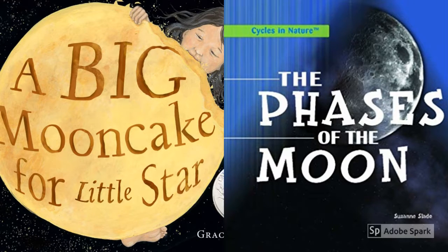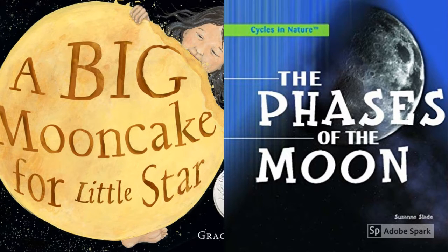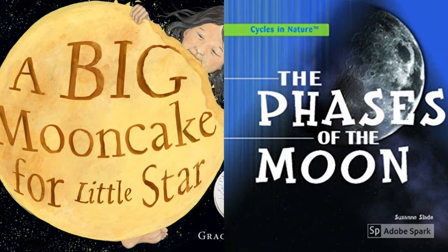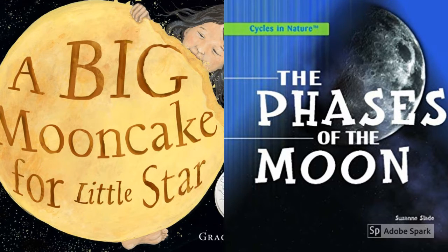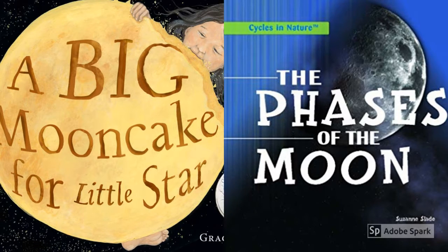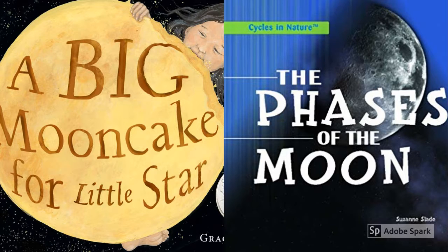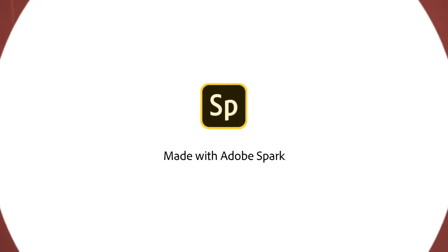Fictional books like A Big Moon Cake for Little Star pair well with non-fiction like The Phases of the Moon. Having these two books studied together allows students to better understand the symbolic language in the fictional book, have a safe place to discuss these new scientific ideas, and better understand the science behind the fictional stories.